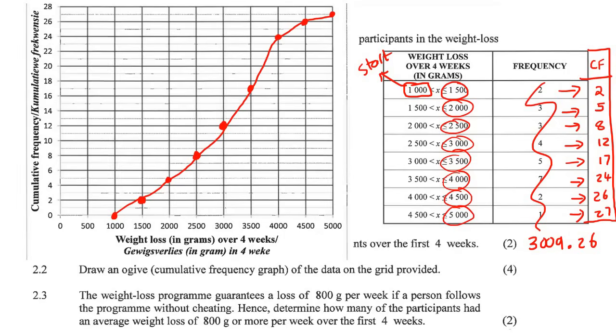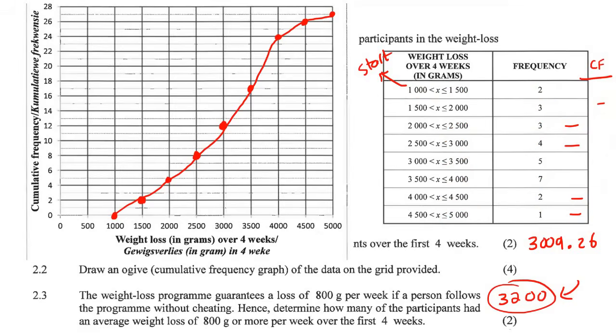Now the next question. The weight loss program guarantees a loss of 800 grams per week if a person follows the program without cheating. Hence, determine how many of the participants had an average weight loss of 800 or more over the first four weeks. So now in these types of questions, you're going to use the ogive. So they want to know... I was a bit confused. I was like 800, but everyone lost more than 800. But this caught me out. This one says over four weeks. This one says 800 grams per week. So if you had to multiply this by four to see how much it would be over four weeks, it would be 3,200.